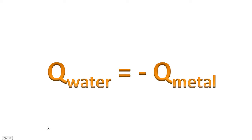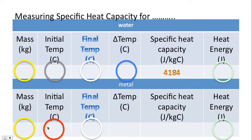This entire experiment hinges on this equation being correct — it assumes that all of the heat energy lost by the metal will only be transferred to the water. Is this 100% valid? No, it's not. But we're going to assume this anyways; we've tried to create an experiment to mimic that condition. With that equation, you know that the heat energy for the metal is the same as the heat energy for the water, except it's the negative of it. The end game is to measure the specific heat capacity.